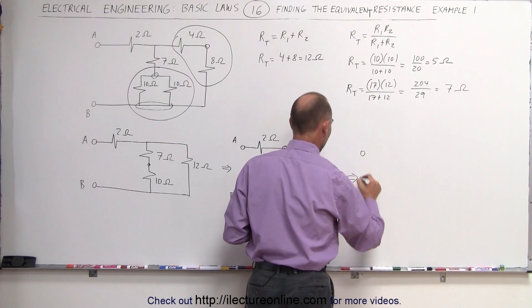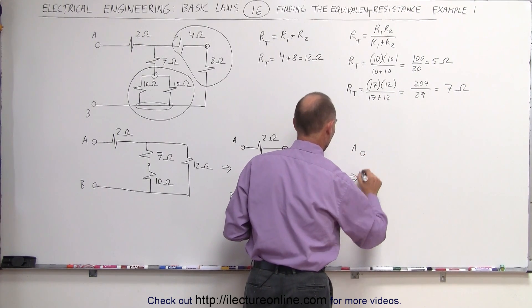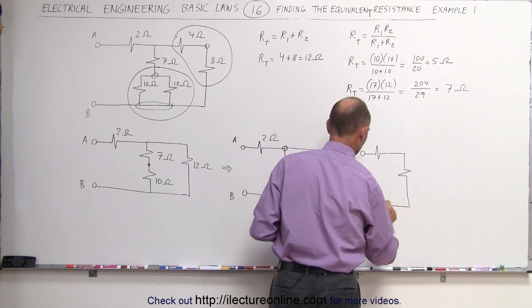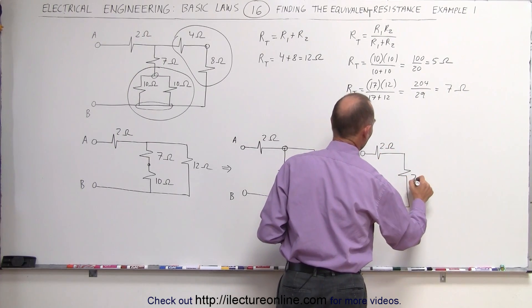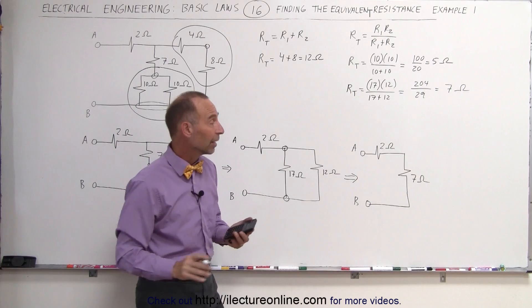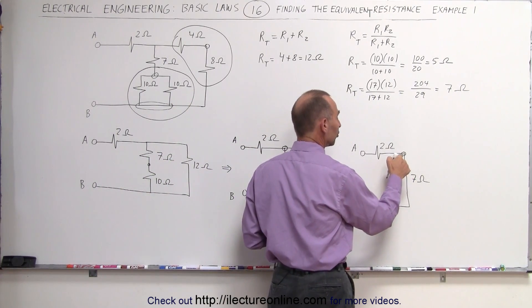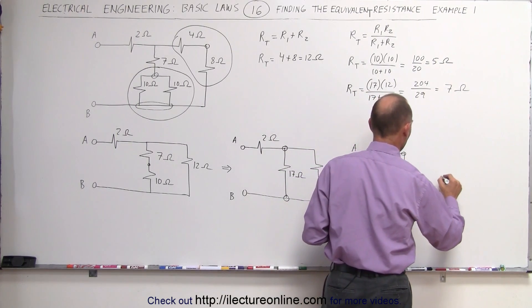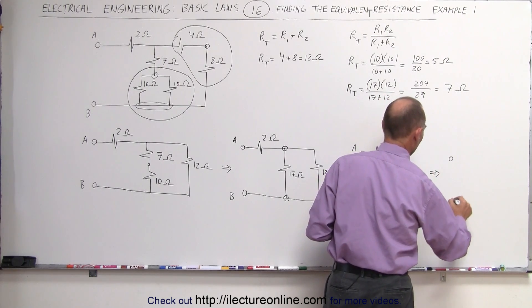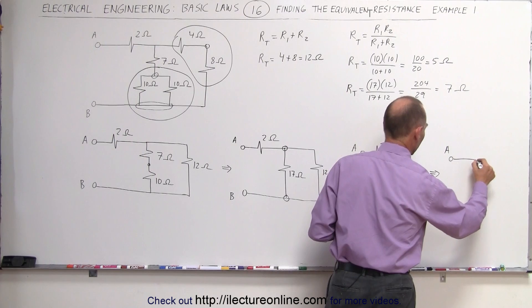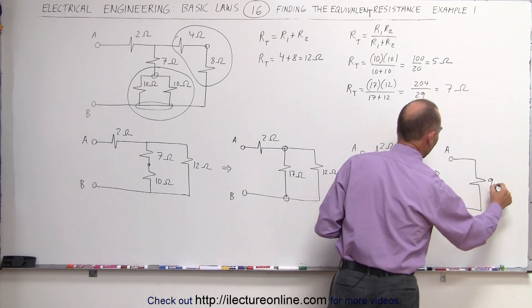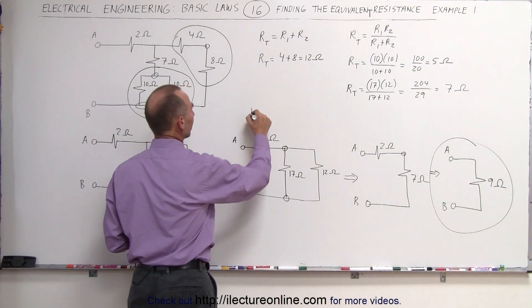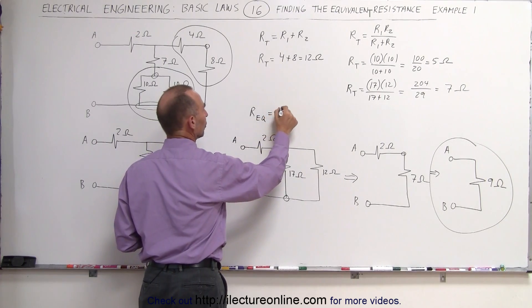The circuit can now be drawn with the A and B terminals, still with the two ohm resistor, and the combined seven ohm resistor. We have a two ohm resistor and a seven ohm resistor. These two resistors are in series because they share a common node exclusively, so the equivalent resistance is simply their sum. This circuit from A to B becomes a single resistor of nine ohms — that is the final answer. The equivalent resistance of this circuit is equal to nine ohms.